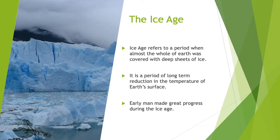Because Earth was covered with deep sheets of ice, there was a long-term reduction in the Earth's surface temperature. Later there were alternate phases of extremely cold and very warm climate. During the Ice Age, these big climatic changes had a great impact on man and animals of the time. They were forced to adapt themselves to the changed climate, and as a result they went through processes of evolution in order to survive.